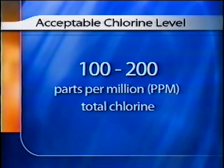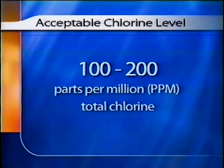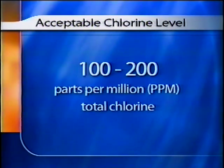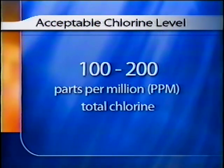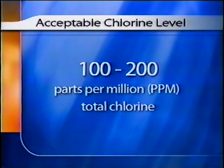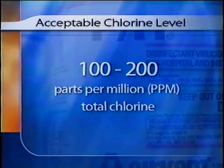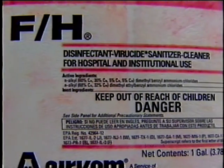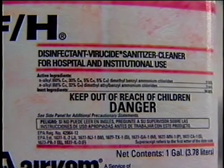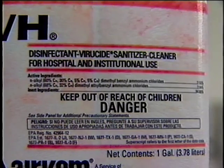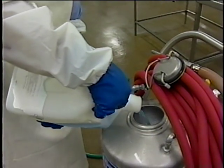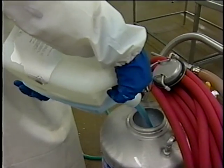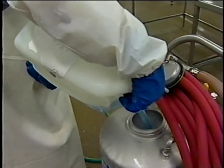When using chlorine, a level of 100 to 200 parts per million total chlorine is considered acceptable for sanitizing food contact surfaces. It is important to follow label instructions when mixing and applying the sanitizers used. All sanitizer concentration levels should also be checked and recorded by a trained individual.